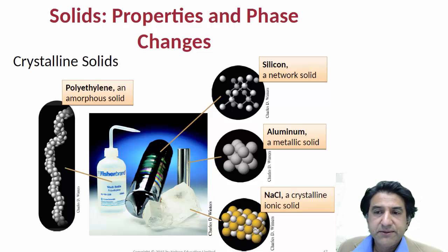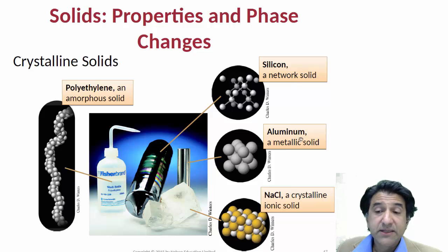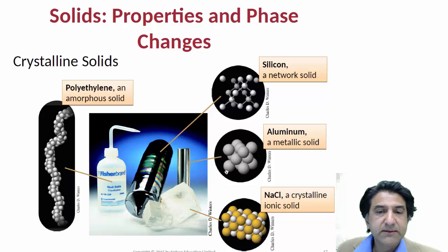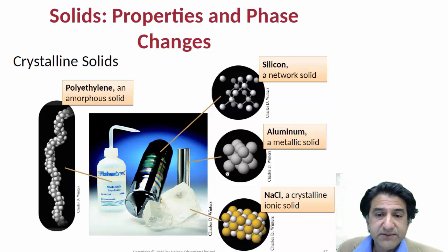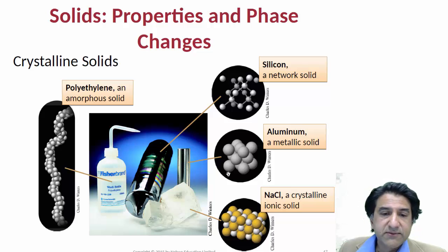These are ordered materials — that's one class, and we call those crystalline materials. Yes, we can have crystals of metal, and this is a particular nanocrystal of metal. You have to grow crystals of metal from molten metal, and you have to cool down the metal slowly, and then you will see the crystals of metal forming.